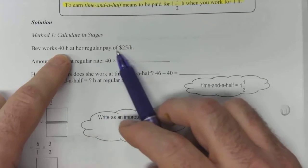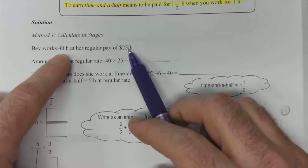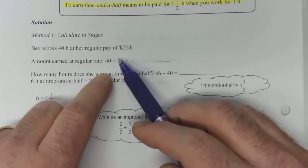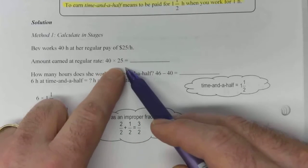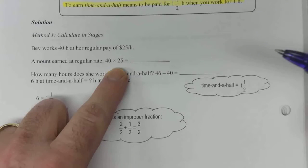Bev works 40 hours at her regular rate of pay of $25 per hour. So that's how much she makes for the first 40 hours in the week. So that becomes 40 times 25, which is $1,000.